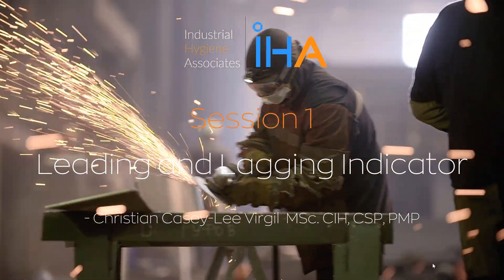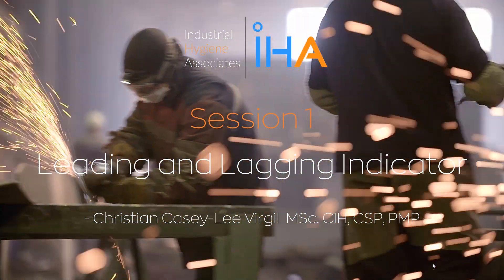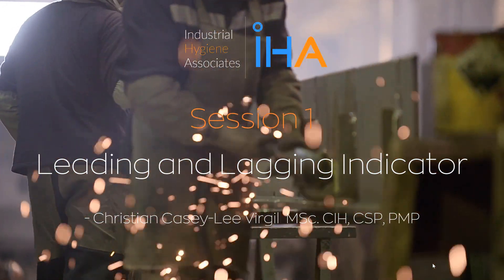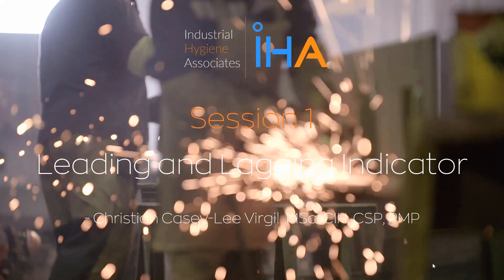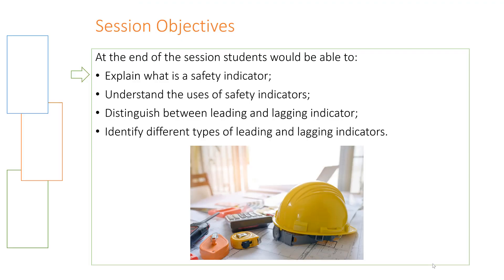In this first session, we will be talking about safety performance indicators, or more specifically leading and lagging indicators, which are types of safety performance indicators. In this session, you should be able to explain what a safety indicator is, the uses of indicators, distinguish between a leading and lagging indicator, and identify the different types of safety performance indicators.